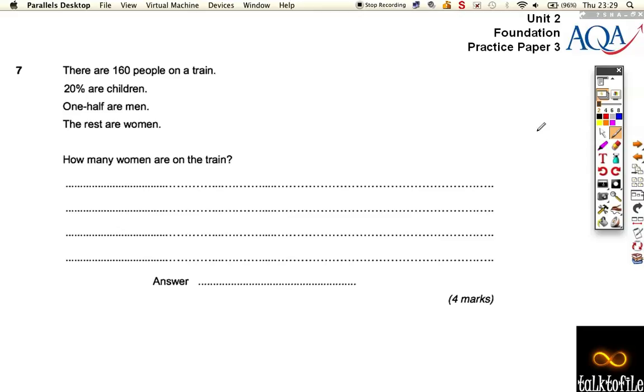Okay, question number seven. We've got some percentages and fractions work to do here. There are 160 people on the train, and 20% are children. Well, if 100% is 160, that means 10% - we're dividing by 10 - which is 16.